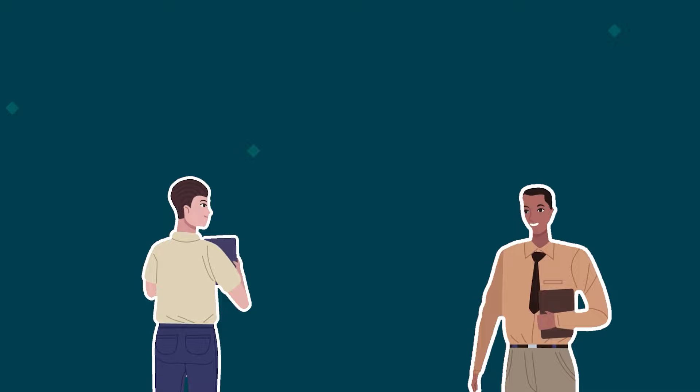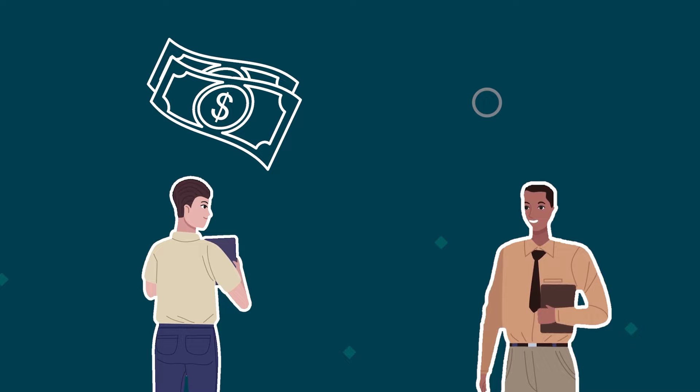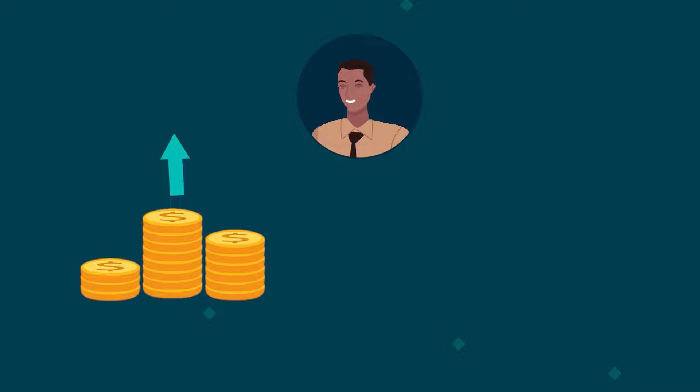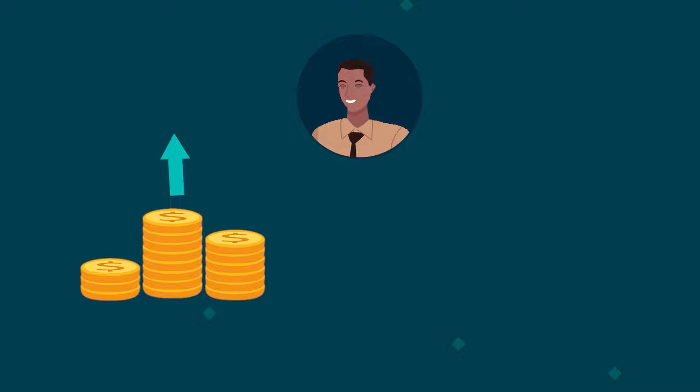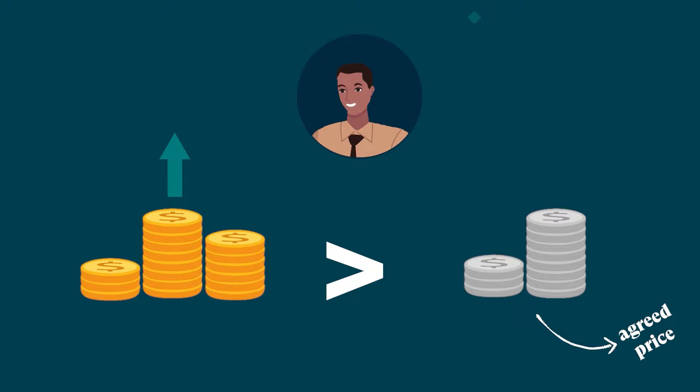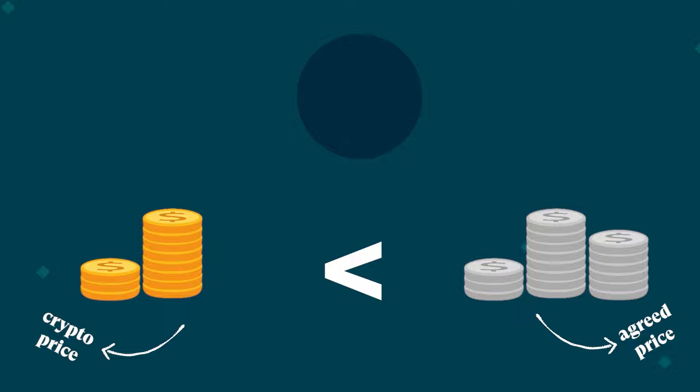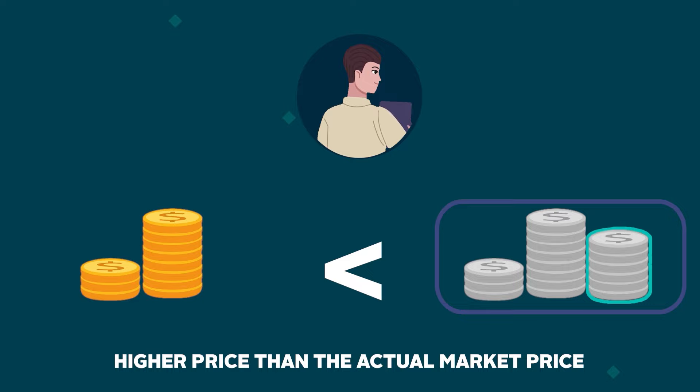For example, a futures contract, which is a type of crypto derivative, will have the parties agree on a selling and buying price of the cryptocurrency in, say, one month, regardless of what the actual price will be. Fast forward to one month later, the buyer may profit if the price of the underlying cryptocurrency went up and is now higher than the agreed price in the contract. And if the price goes down and lies below the agreed price, the seller will make a profit because the buyer will be purchasing the asset at a higher price than the actual market price.